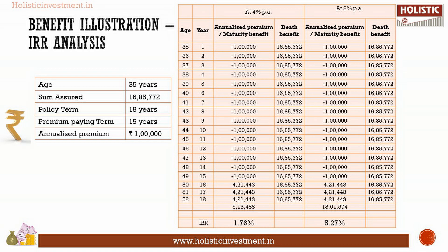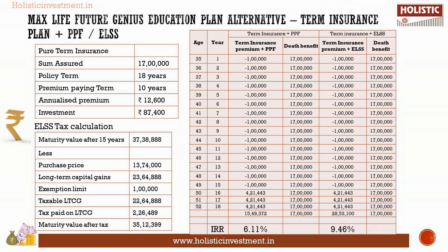In the above IRR calculation, the final payout varies due to the bonus amount. In the four percent scenario, the IRR is 1.76 percent — your savings bank account yields better interest than your investment in Max Life Future Genius Education Plan. In the eight percent scenario, the IRR is 5.27 percent — even a bank fixed deposit earns a better return than your investment in this plan.